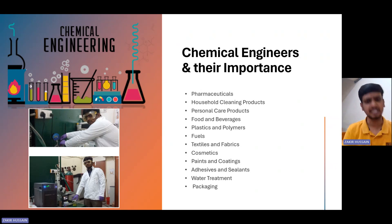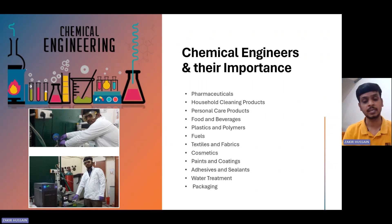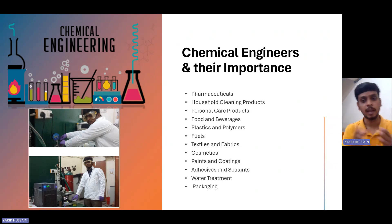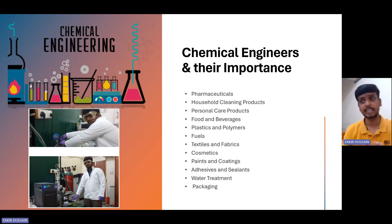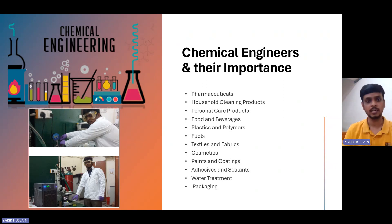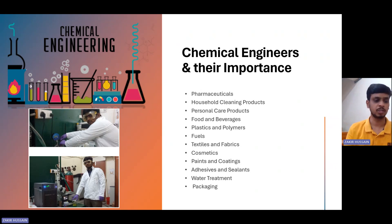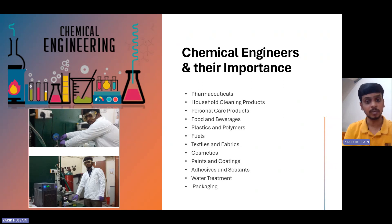Next are fuels. Petrol, diesel, and gasoline — everything in crude oil refinery — is operated by chemical engineers. Companies like ExxonMobil, Shell, Indian Oil Corporation, BPCL, HPCL, and Reliance employ chemical engineers. There are two streams: upstream engineers who explore and exploit fuel sources beneath the earth's crust, and downstream engineers who refine the crude oil into various products using processes like atmospheric distillation units, vacuum distillation units, and fluid catalytic cracking.